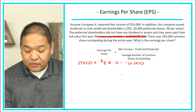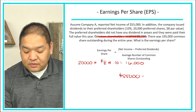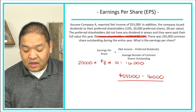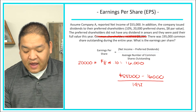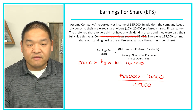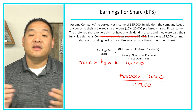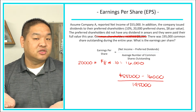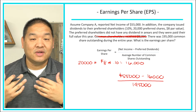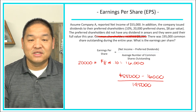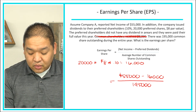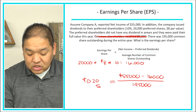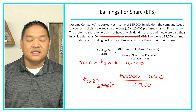Now we apply the EPS formula: net income minus preferred dividends, divided by the average number of common shares outstanding. Net income is $55,000, minus $16,000 in preferred dividends, divided by 195,000 shares. Since shares were 195,000 for the entire year, that is already the average — beginning plus ending divided by two still equals 195,000. When we do that calculation, we get $0.20 per share, so our EPS is 20 cents a share.